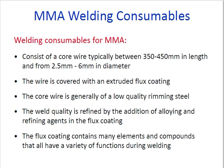The core wire is generally of low-quality rimming steel. The weld quality is refined by the addition of alloy and refining agents in the flux coating. When the refining agent melts with the rimming steel, good quality is achieved. The flux coating contains many elements and compounds that have a variety of functions during welding.